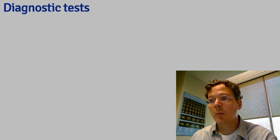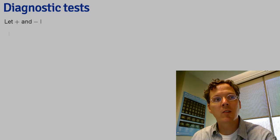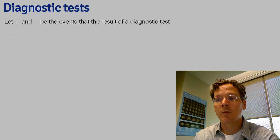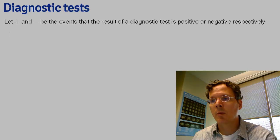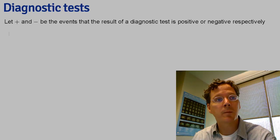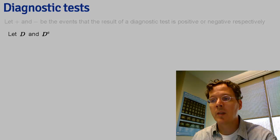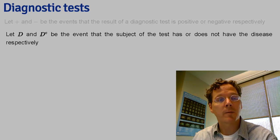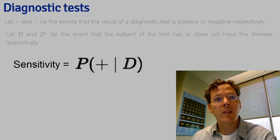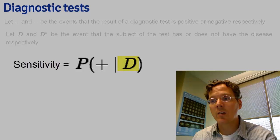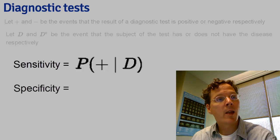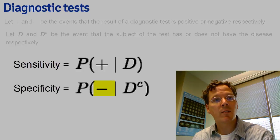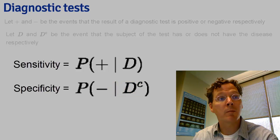Let's talk about conditional probability in the context of diagnostic tests, one of the most important examples of conditional probability and Bayes' rule. Let plus and minus be the event that the test is positive or negative — plus meaning the test says the person has the disease, minus meaning they don't. Let D and D complement be the event that the person either does or does not have the disease. The sensitivity is the probability that the test is positive given that the subject actually has the disease. The specificity is the probability that the test is negative given that the subject does not have the disease — probability of minus given D complement.